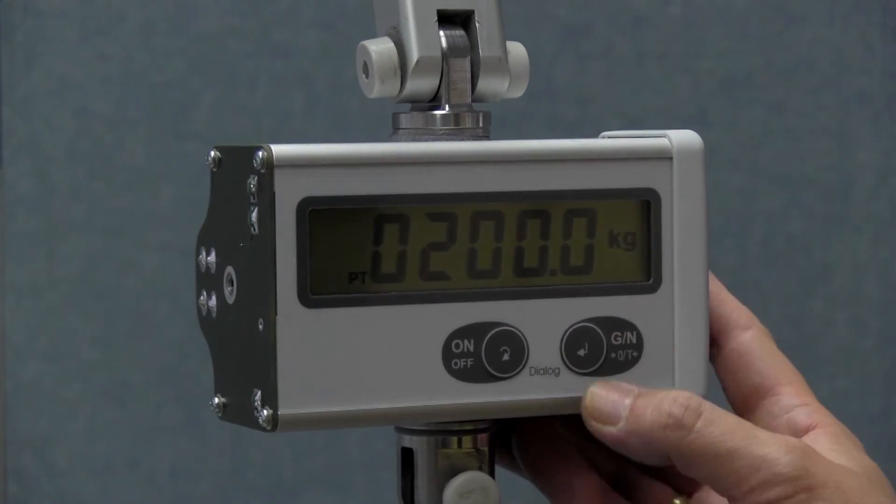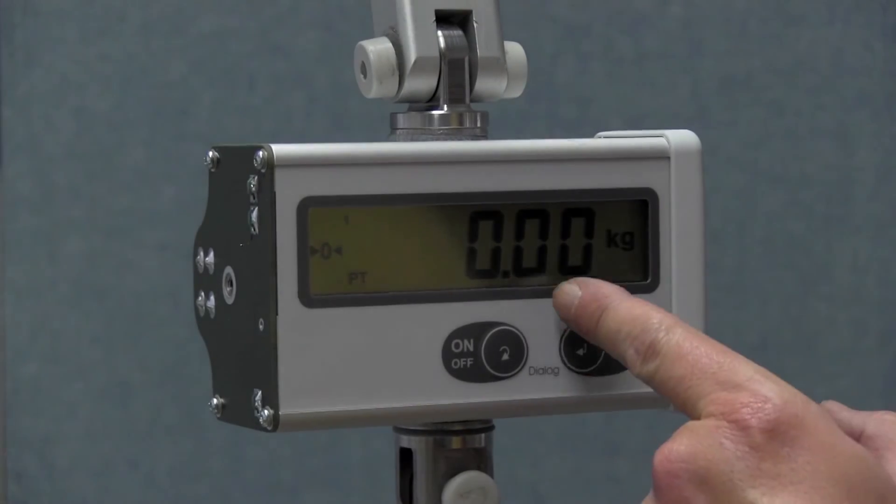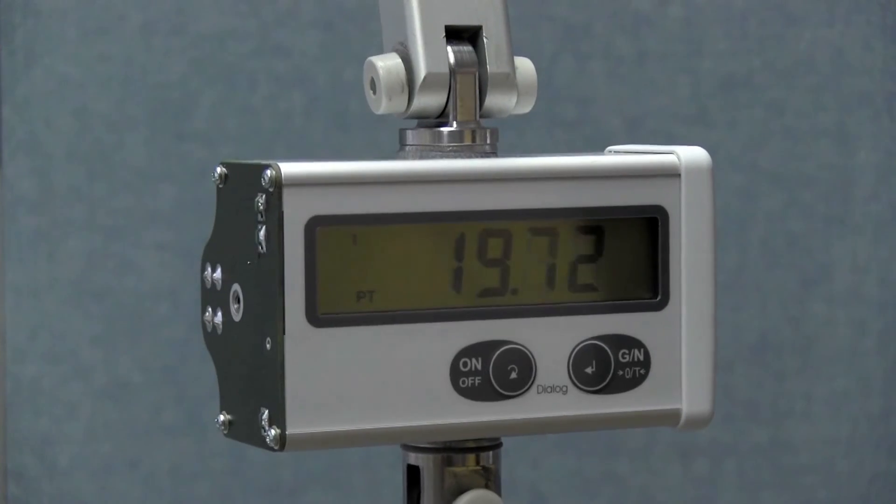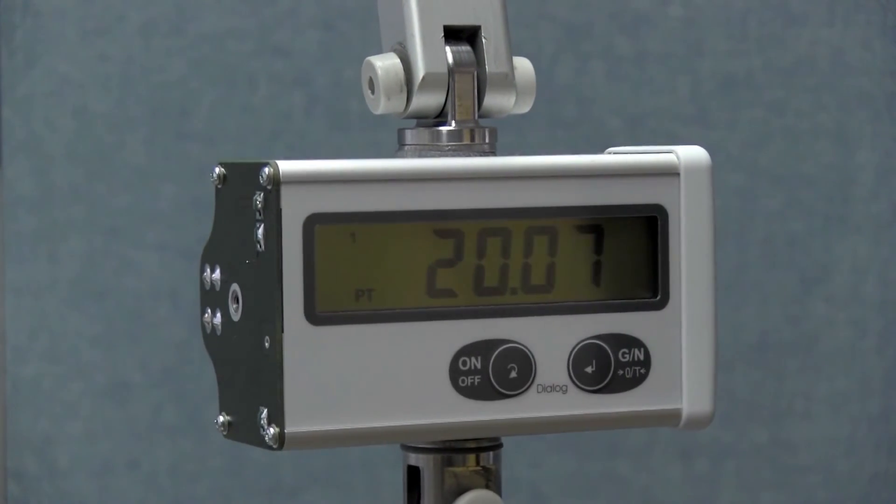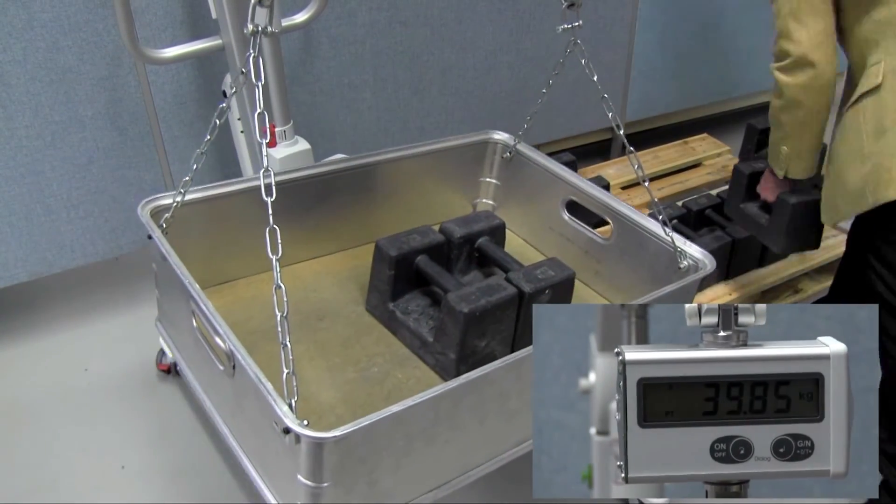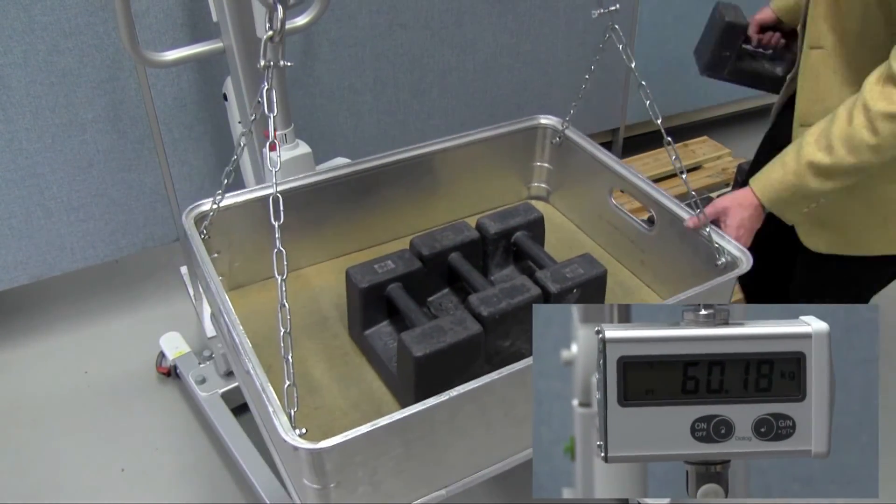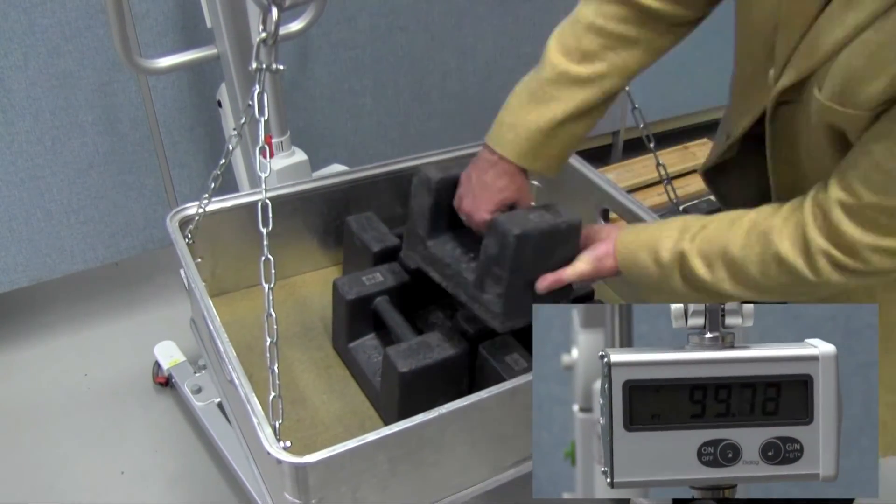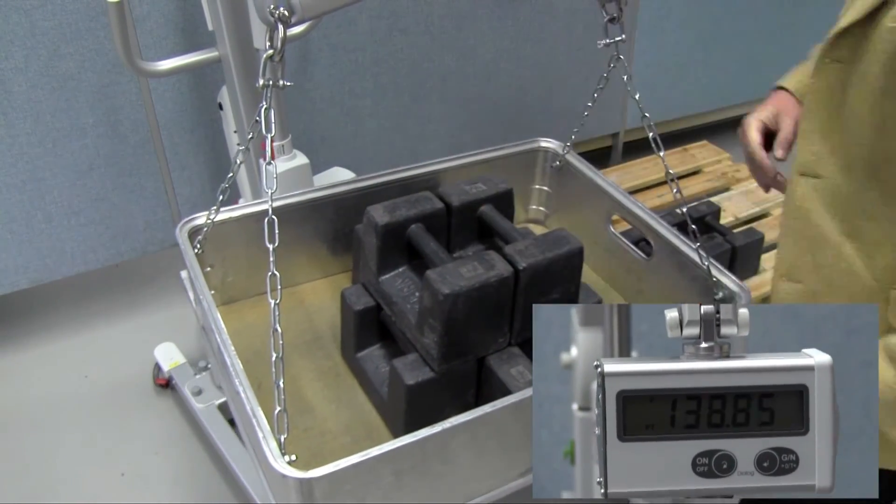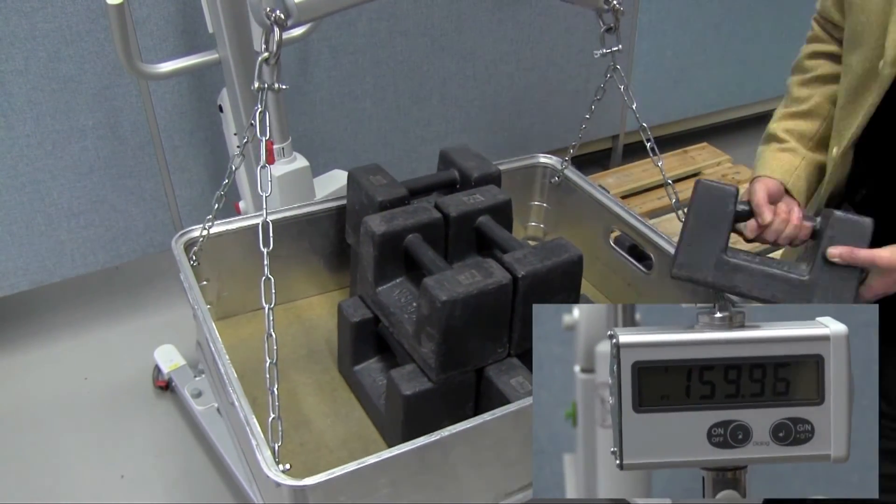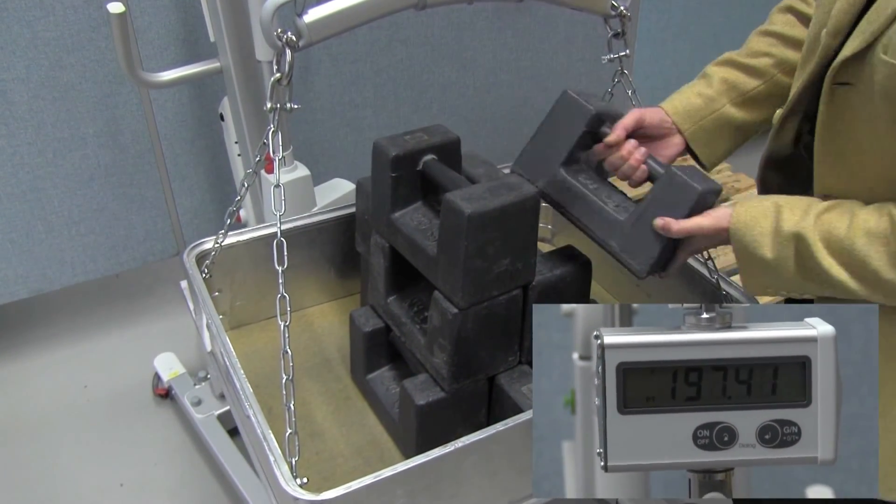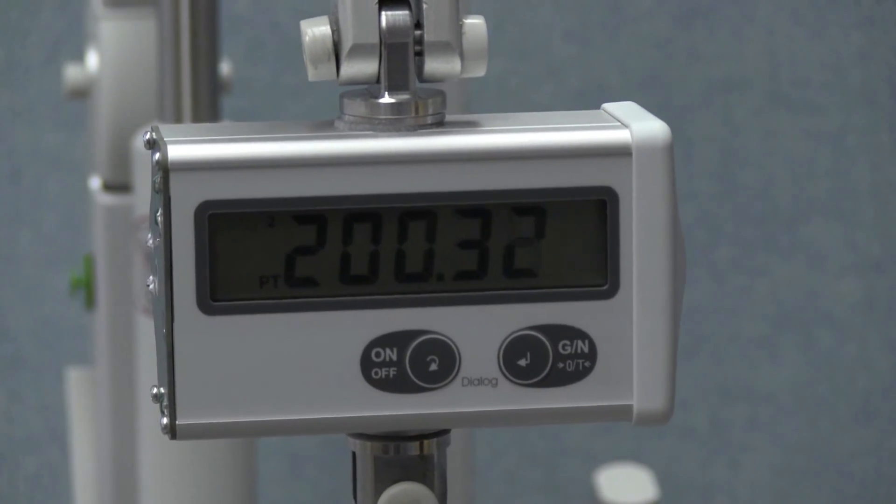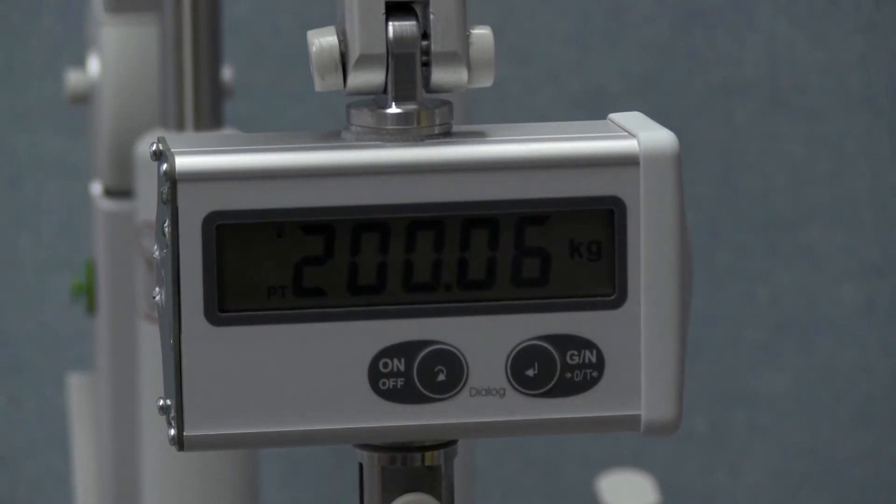When I confirm the test weight of 200 kilograms, the scale automatically assumes its zero value, and I can then add weights to move the test weight up to 200 kilograms. After the last weight is placed in the box, I'm going to press the button on the bottom of the box. 200 kilograms appears in the scale display. I confirm and end the process with the GN key.